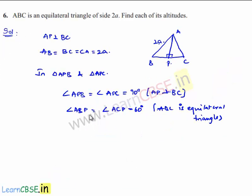According to AA similarity, we can say triangle APB is congruent to triangle APC. Then we know that when two triangles are similar, then the corresponding sides will be in the ratio.